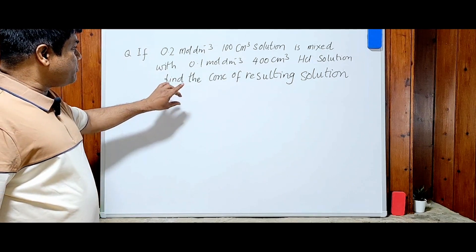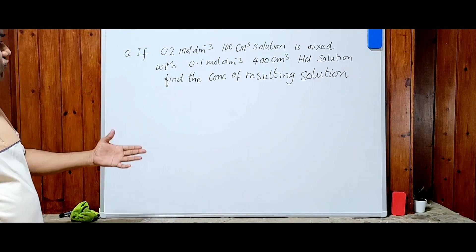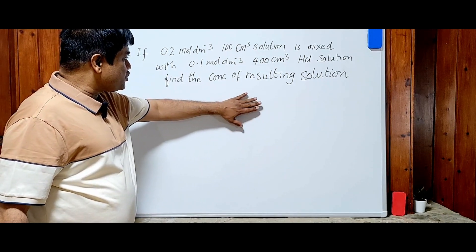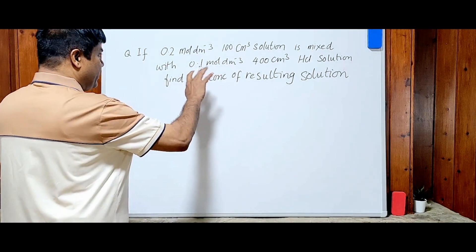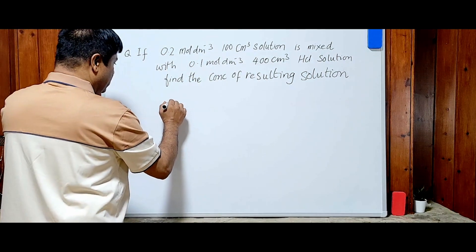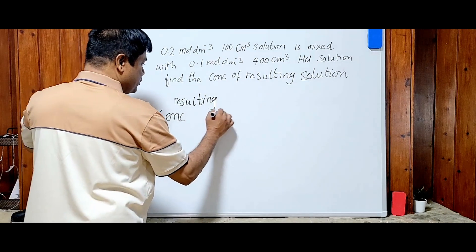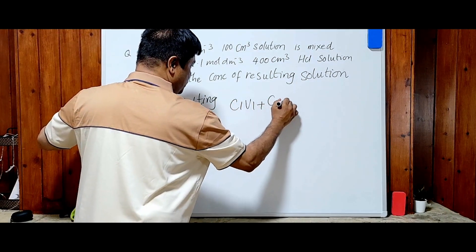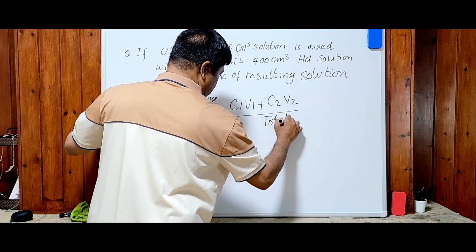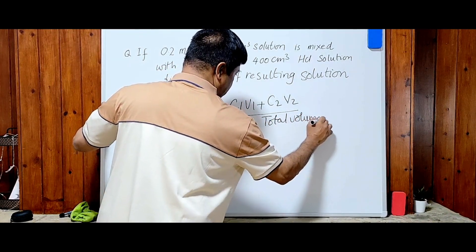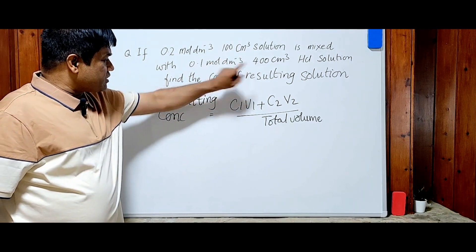This question is based on when two solutions are mixed in a big container — how can we figure out the molarity or the concentration of the resulting solution. I have a short formula for that. The resulting concentration equals C1V1 plus C2V2 over total volume. This formula can only be used when we have the same chemical substance or same solute.